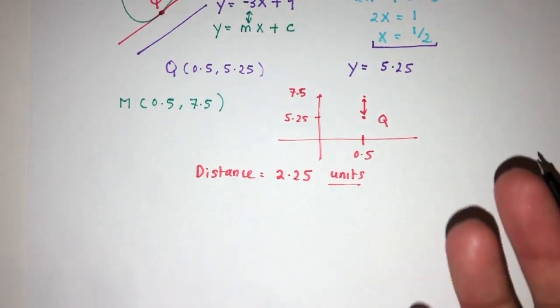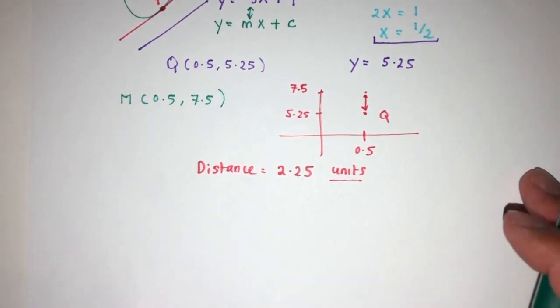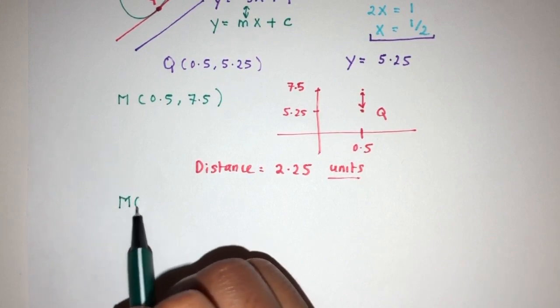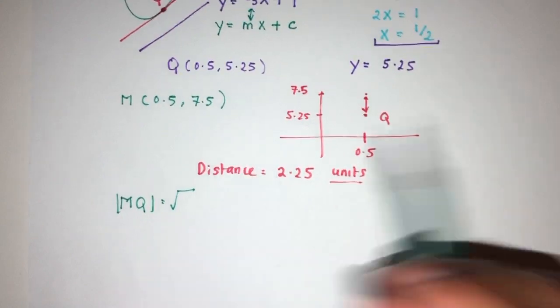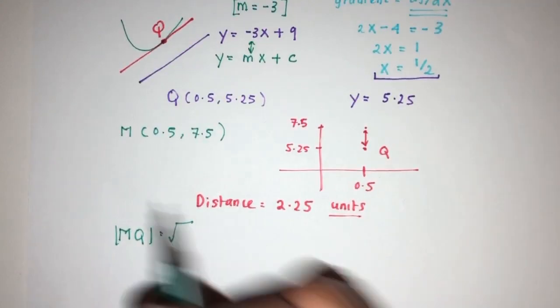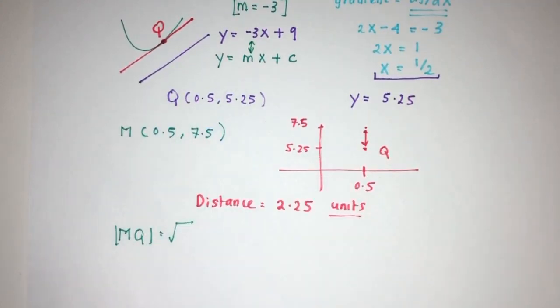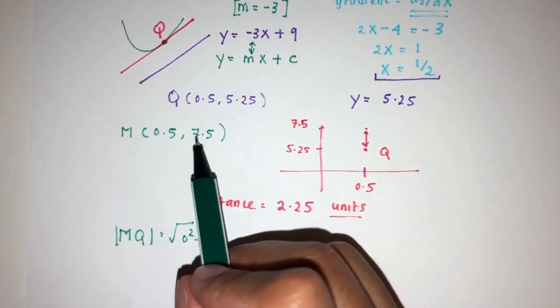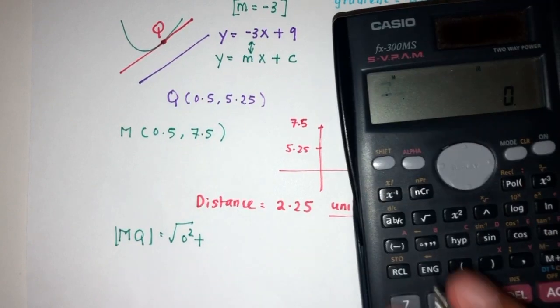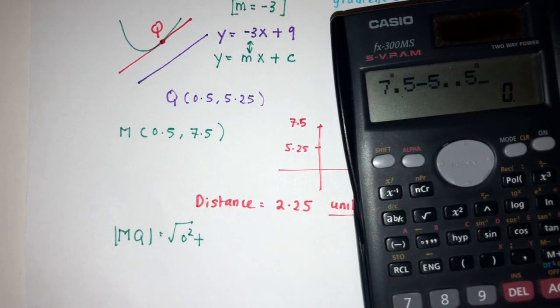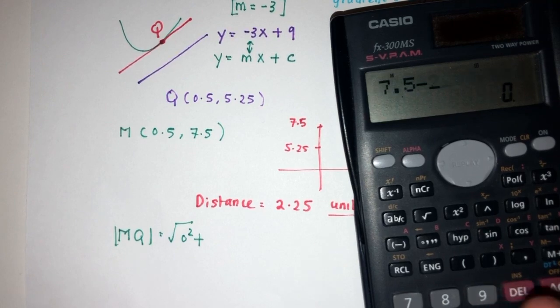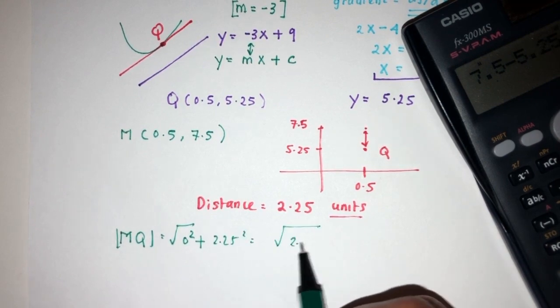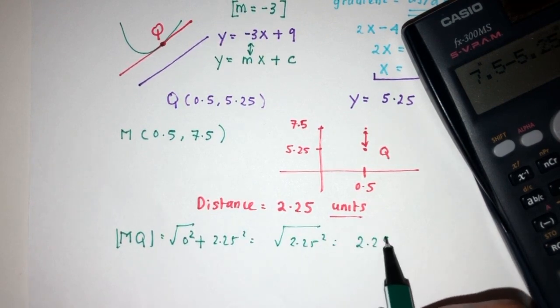You don't need to do this by observation. You can always revert back to using the formula. Distance MQ has to be root of, first we do x₂ minus x₁, that will be 0², and then this minus this, so 7.5 minus 5.25, that's 2.25 squared. That will be root of 2.25², which should be 2.25 as your answer.